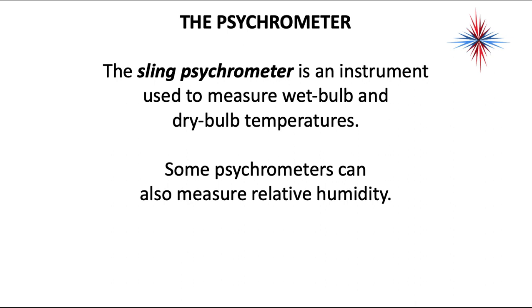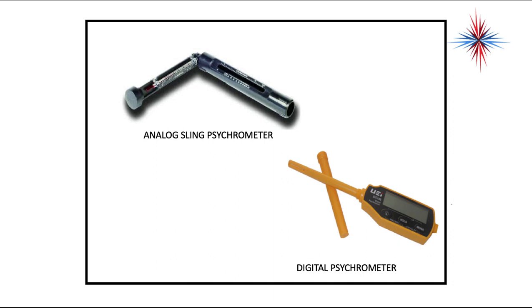The sling psychrometer is an instrument used to measure wet bulb and dry bulb temperatures. Some psychrometers can also measure relative humidity. Back in the day, before digital psychrometers, you used a sling psychrometer with two thermometers. One thermometer had a wick you'd put distilled water on, and then you'd twirl the instrument in the air to cause airflow across the thermometers, giving two different readings. Now we have digital psychrometers — you just put the probe into the airstream and it takes both wet and dry bulb readings.